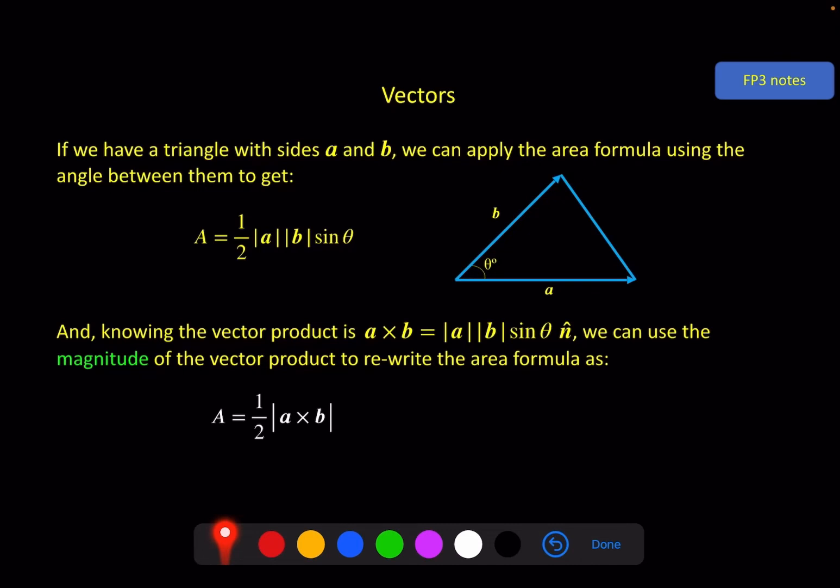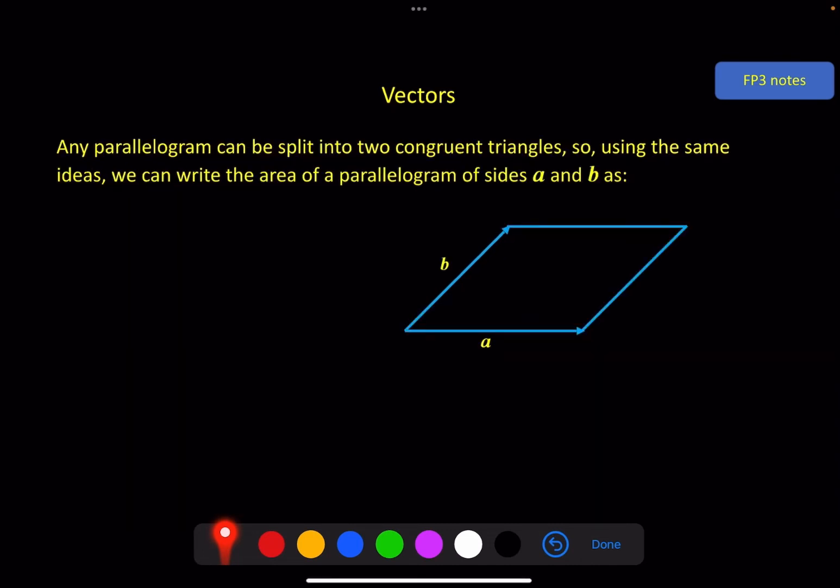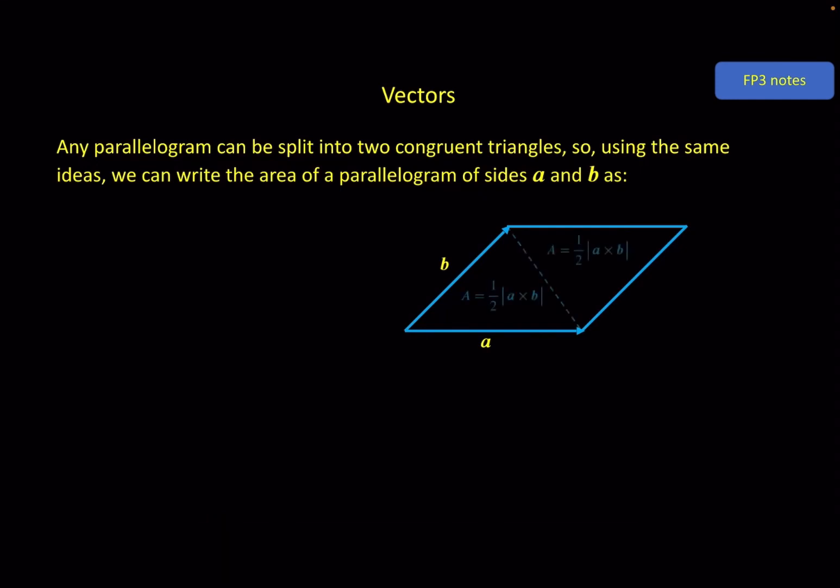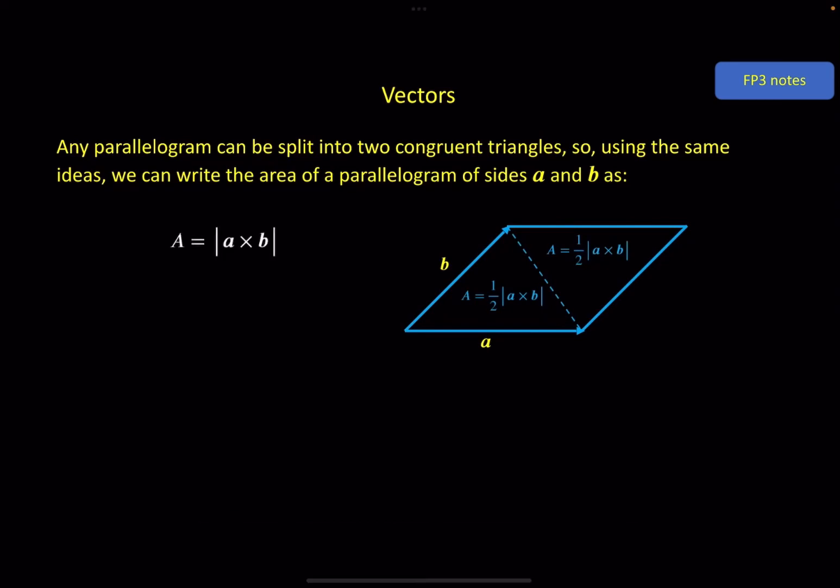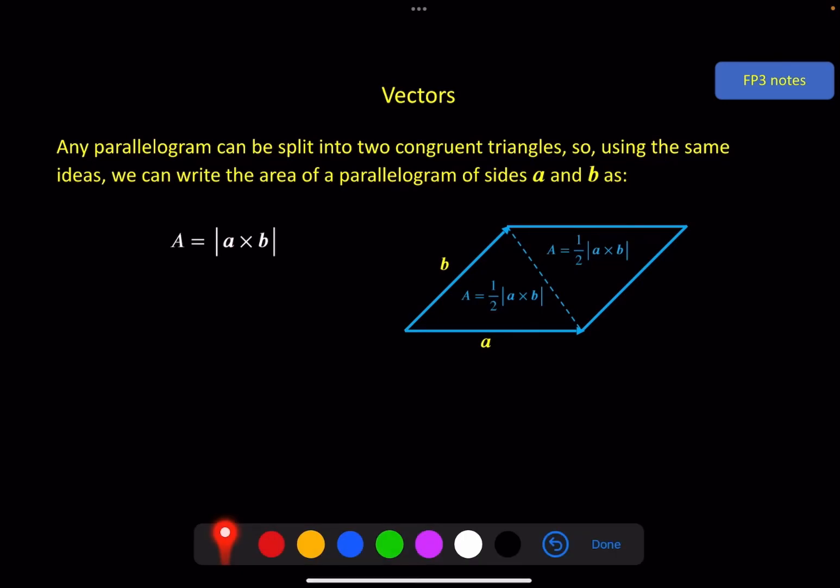We can go a step further here and say that any parallelogram, which you can split into two congruent triangles, can use this same idea. If it's defined by two vectors a and b, add these two together, gets rid of the half. So the area of a parallelogram defined by the vectors a and b as the two non-parallel sides is given by the magnitude of a cross b.